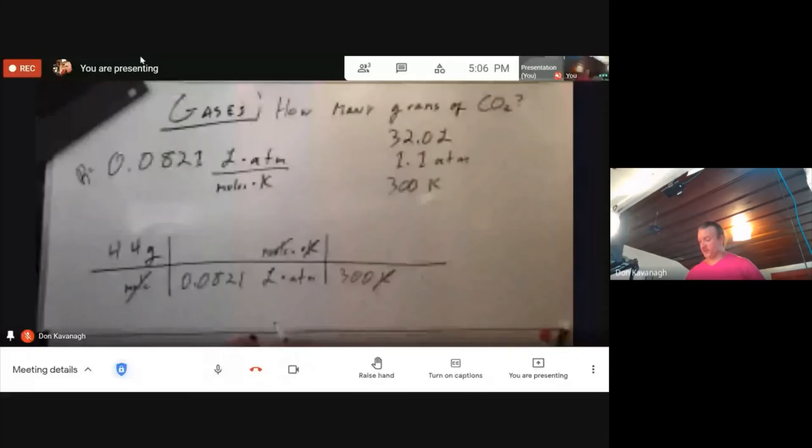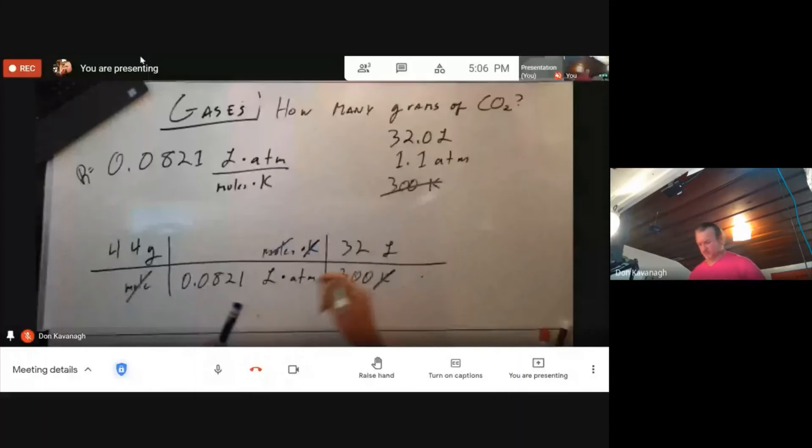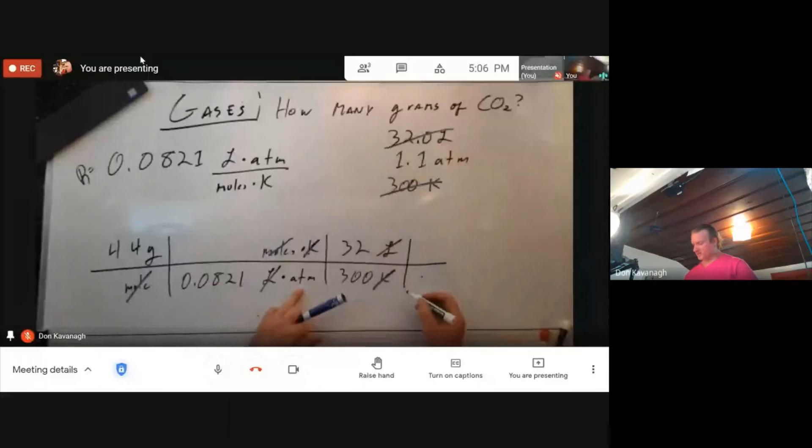Liters, 32 liters. And finally pressure, 1.1 ATM. That's going to go up on top to make top cancel out bottom.